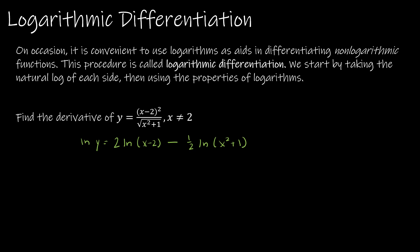Then I take the derivative of everything. The derivative of ln(y) is y prime over y. The derivative of 2 times ln(x minus 2) is 2 times 1 over (x minus 2). The derivative of the natural log of x squared plus 1 is 1 over (x squared plus 1) times the derivative of x squared plus 1, which is 2x. With the one-half factor out front, the twos cancel, leaving: y prime over y equals 2 over (x minus 2) minus x over (x squared plus 1).